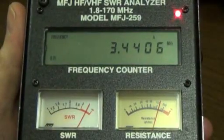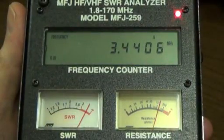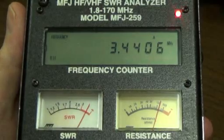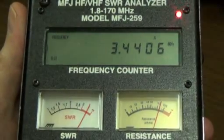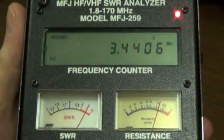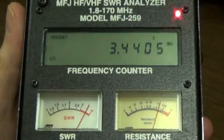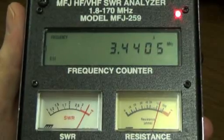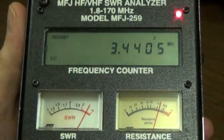I'm using an MFJ 259 SWR analyzer. It's an old one but still very functional. When checking an antenna, I always like to start just outside the band edge. I'm checking a 75 or 80 meter antenna.